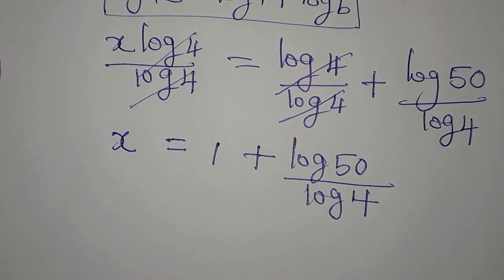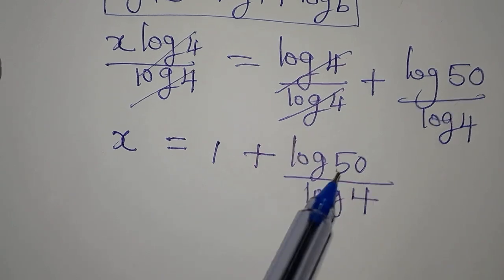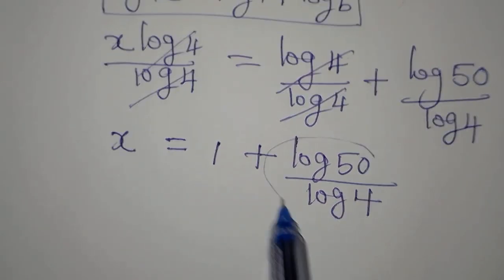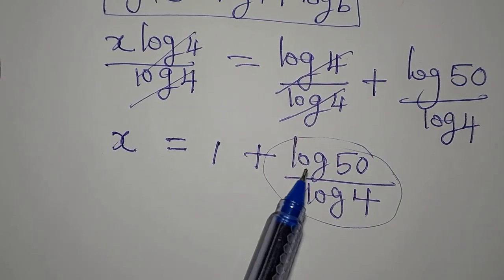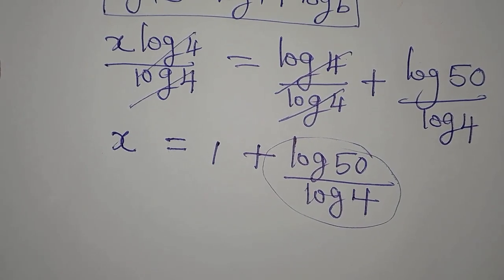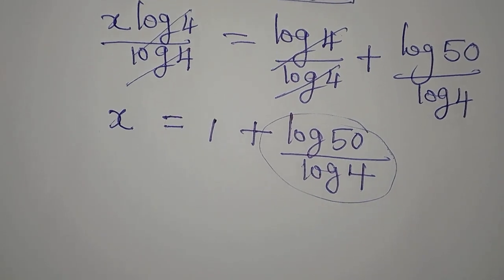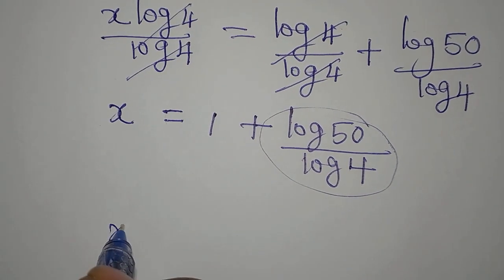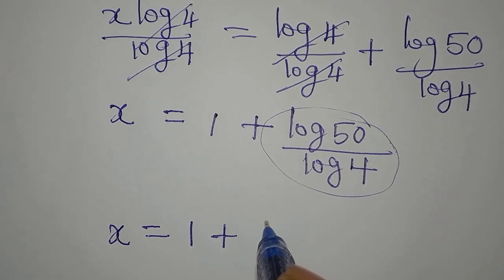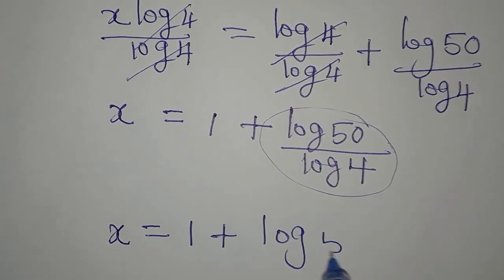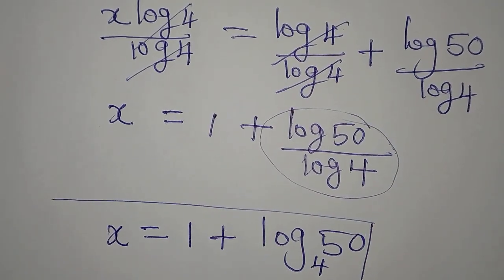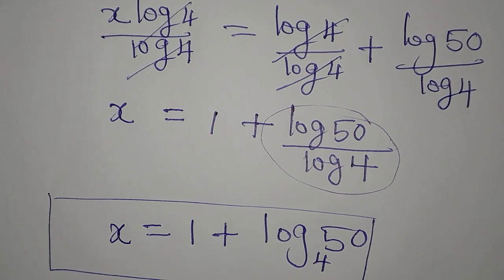So x remains on the left. On the right, log 4 over log 4 is 1, plus log 50 divided by log 4. Since both are in base 10, we can apply the change of base formula: x equals 1 plus log 50 to base 4. This is the value of x.